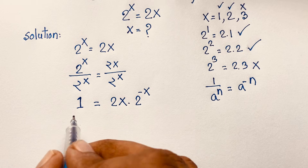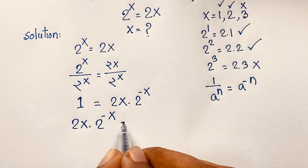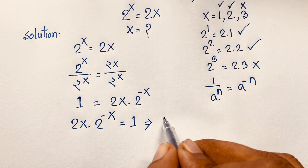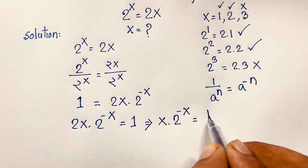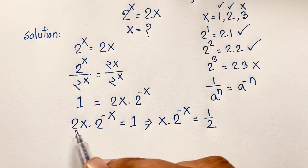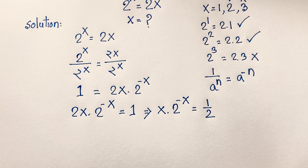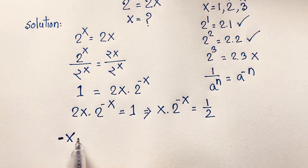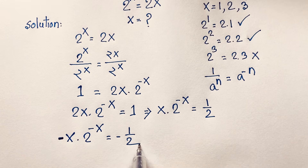Moving terms to one side gives: 2x times 2^(−x) equals 1. Dividing both sides by 2 gives x times 2^(−x) equals 1 over 2. Now I multiply both sides by negative one because I want to use the Lambert W function, giving: minus x times 2^(−x) equals negative one half.